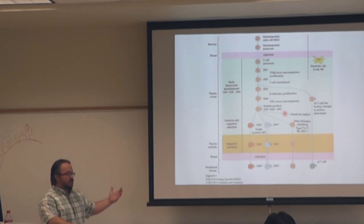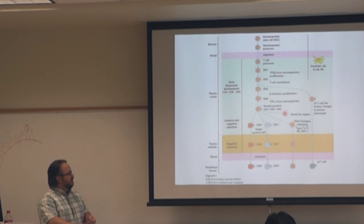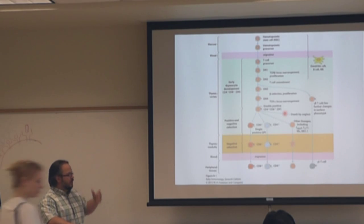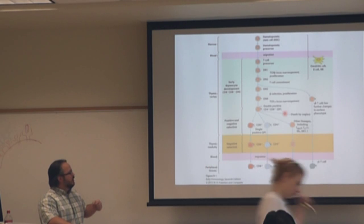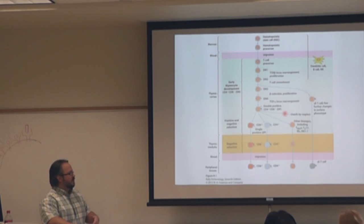This is where they're going to get specificity. When they're double positive, they go through positive and negative selection, and they're going to get selected for those that recognize self MHC, so they're restricted to self MHC. They're only going to respond to antigen if it's presented by self MHC. We'll talk about an experiment showing how they figured that out — this is all things that have happened within our lifetimes. The people that won the Nobel Prize for some of this stuff are still alive and giving presentations.